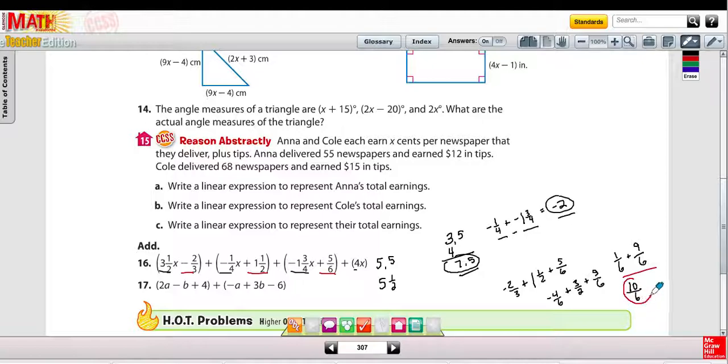When I combined them all, I got 10/6, which is the same thing as 1 and 4/6, or 1 and 2/3, so 1 and 2/3. And I could write that 5.5 plus 1 and 2/3, or 5½ plus 1 and 2/3.